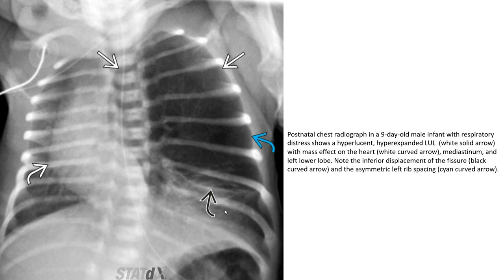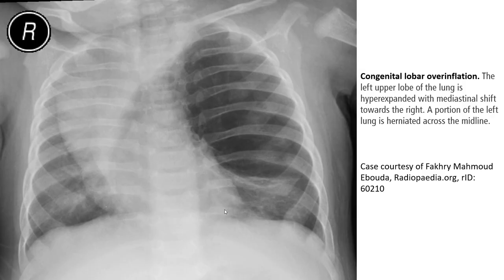AP radiograph of a nine-day-old male infant with respiratory distress shows hyperexpansion and hyperlucency of the left upper lobe with mass effect on the heart, mediastinum, and left lower lobe. This is a case of congenital lobar overinflation. The left upper lobe is hyperexpanded with mediastinal shift toward the right, and a portion of the left lobe is herniated across the midline.